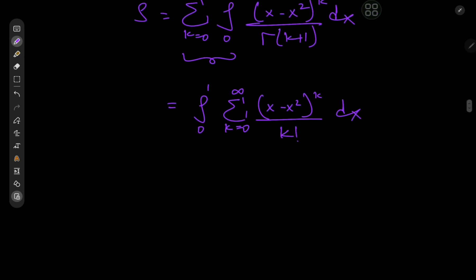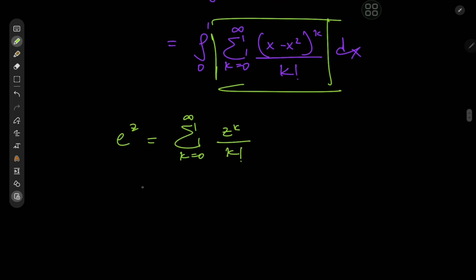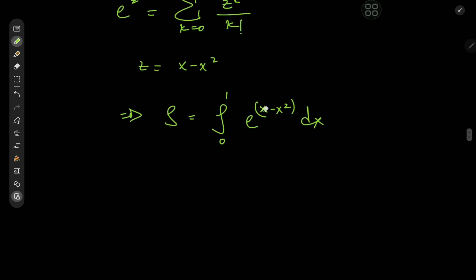What exactly is this infinite series? Well, it's something quite familiar to us. Recall that the exponential function e to the z can be expanded as the sum over non-negative integers k of z to the k divided by k factorial. So in our case, we have z equal to x minus x squared. This implies that s is now the integral from 0 to 1 of e to the x minus x squared dx, which we could write as e to the negative x squared minus x.